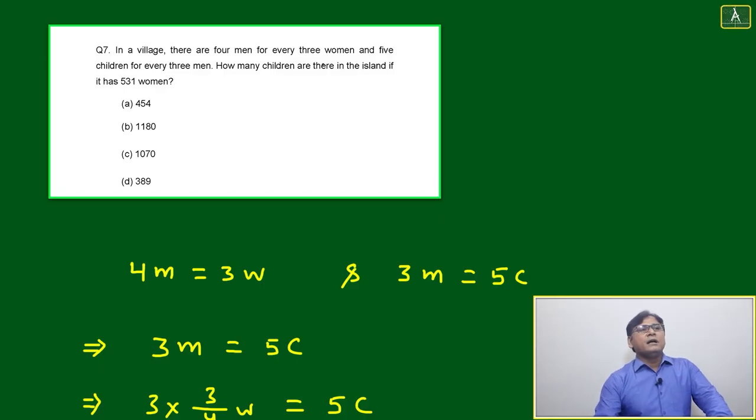This question is based on inverse proportionality and ratio, or you can say just conversion of a ratio from one format to another format. In a village there are four men for every three women and five children for every three men.